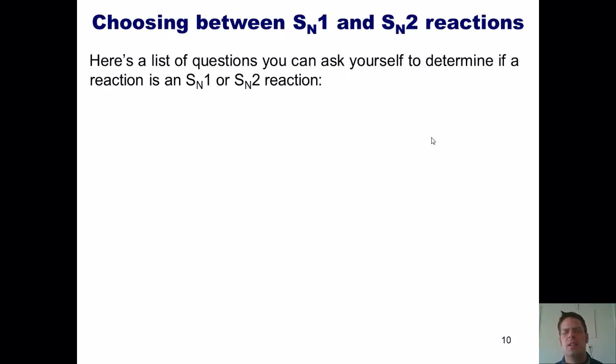One thing I've seen a lot of organic chemistry professors not do a great job of is teaching students how to clearly distinguish between whether a reaction will go SN1 or SN2. I think the reason we professors shy away from doing this is because there are often tons of exceptions.